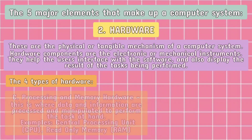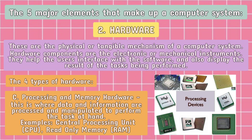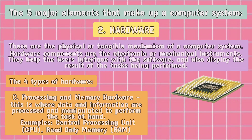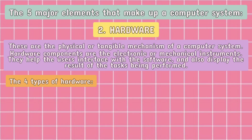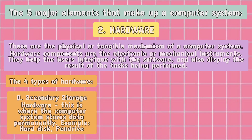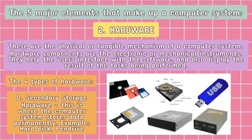The third one is the processing and memory hardware. This is where data and information are processed and manipulated to perform the task at hand. Examples: the central processing unit or CPU, and the read-only memory or ROM. And the fourth one is the secondary storage hardware, where the computer system stores data permanently.